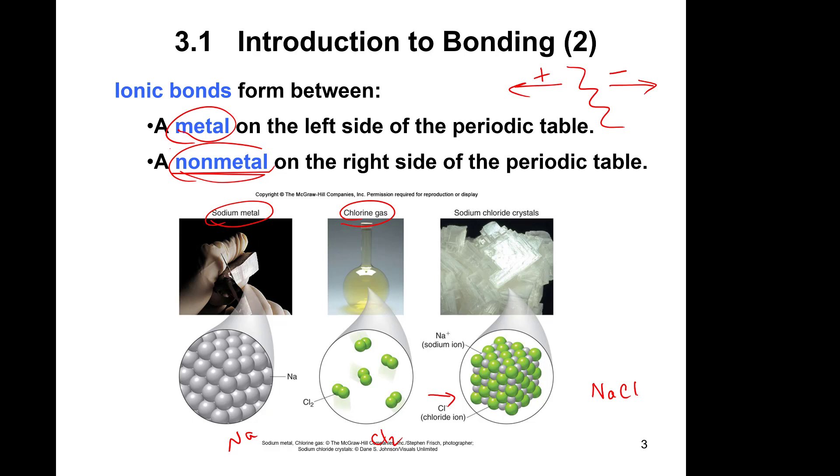Interestingly, sodium metal will actually explode if you throw it in water. Chlorine gas, which exists as Cl₂, will actually kill you if you breathe it in. But when they react to form sodium chloride, which is also known as table salt, that's actually something you can consume. So how these things arrange is very important in what type of compound they become.